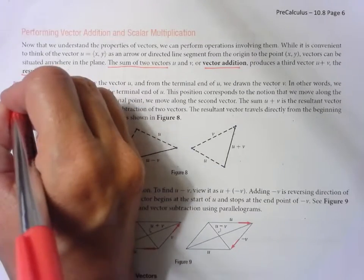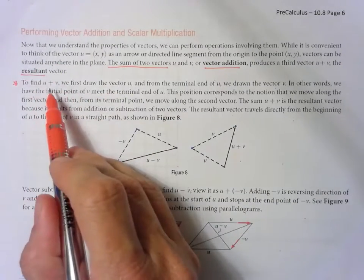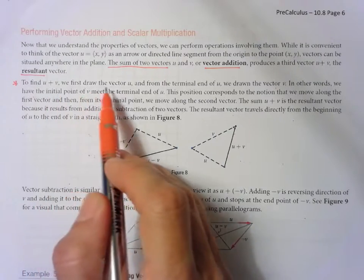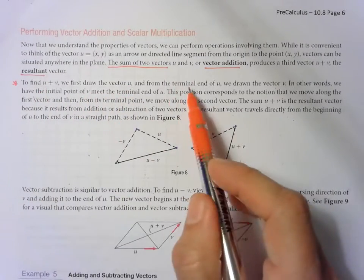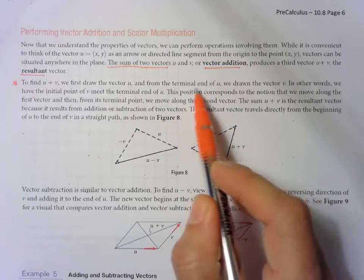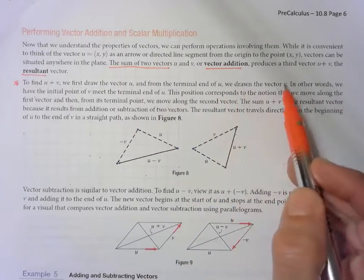This first sentence right here: to find u plus v, we first draw the vector u. So draw the first one. From where it stops, from the terminal end of u, we draw the vector v.